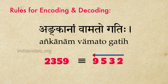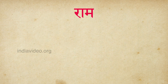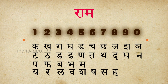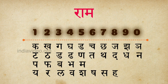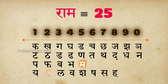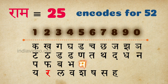Here is another example: the name Rama would correspond to 25 in the Kattapayadi system, but when read by application of this rule, Rama becomes an encoding for the number 52. Historically, more recent use of Kattapayadi in some instances has not followed this sequence of decoding from right to left.